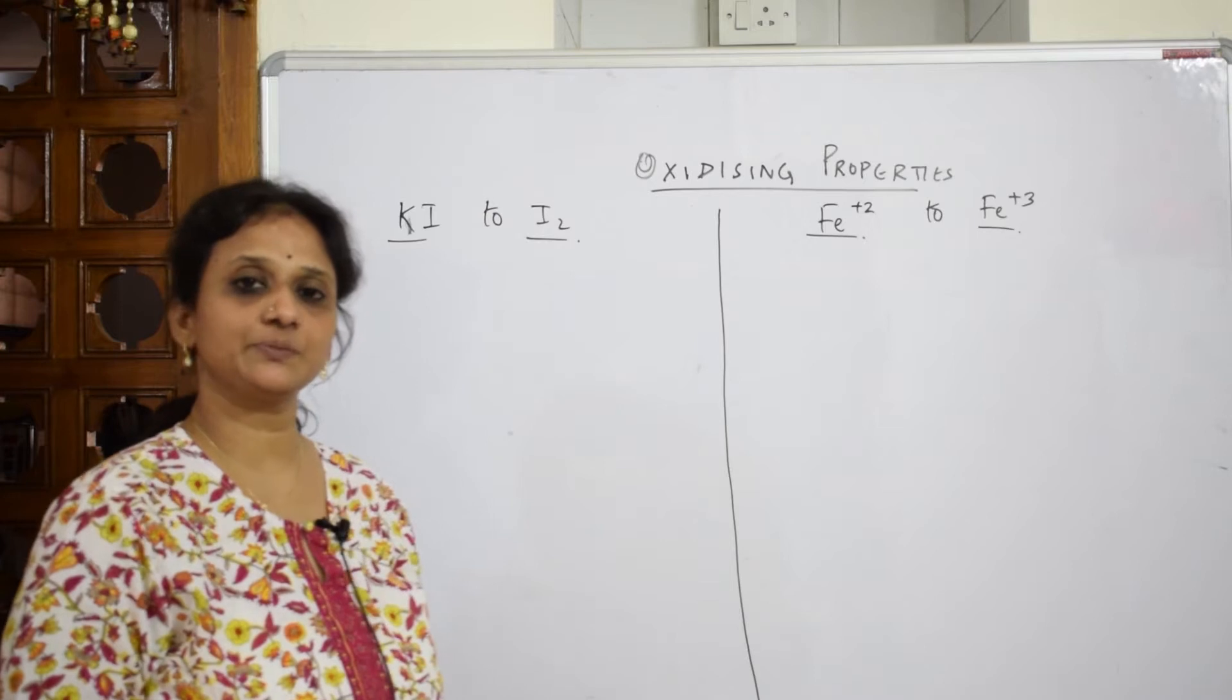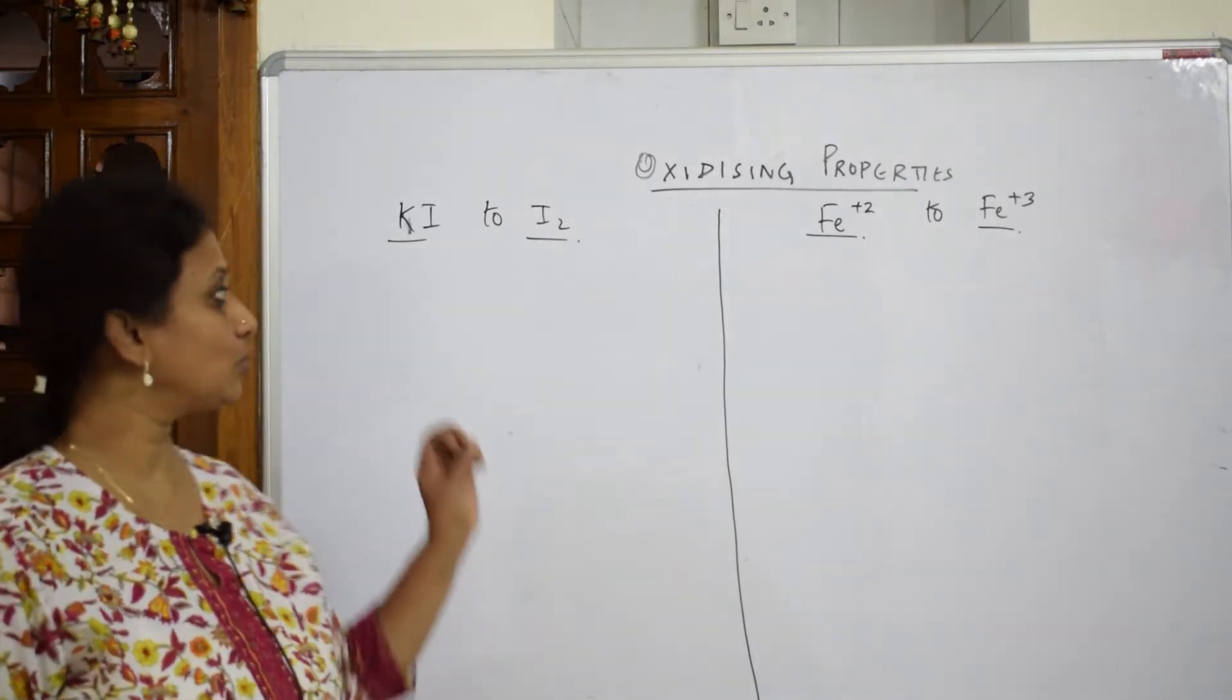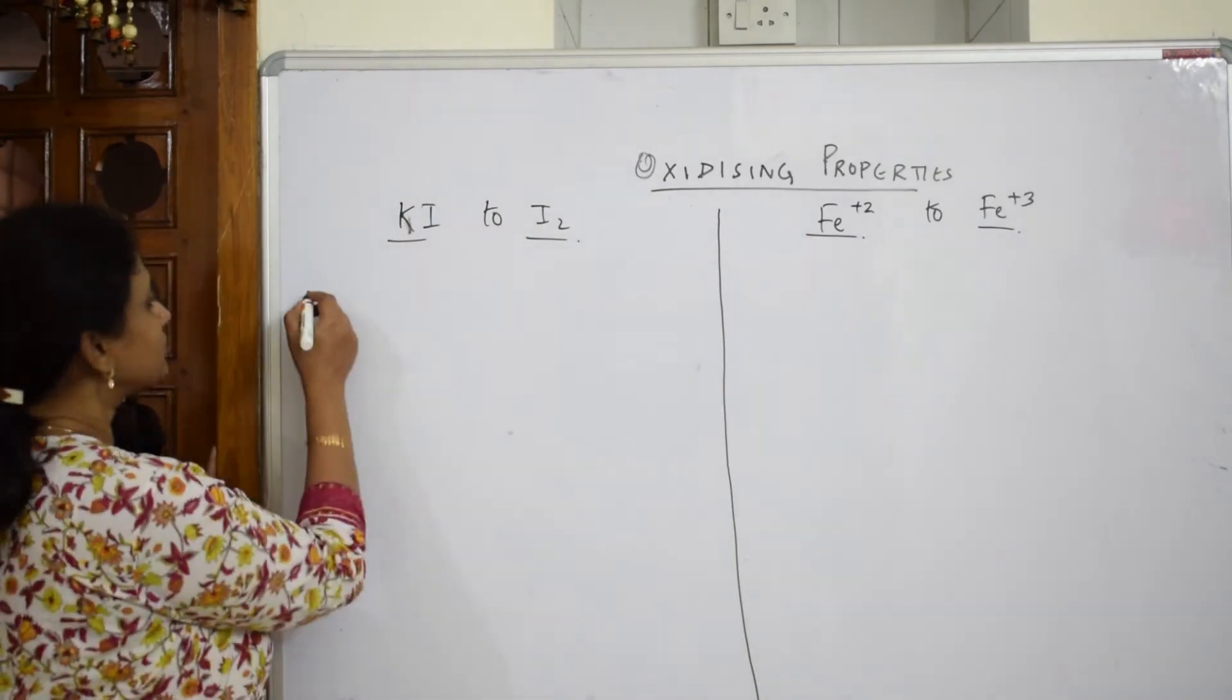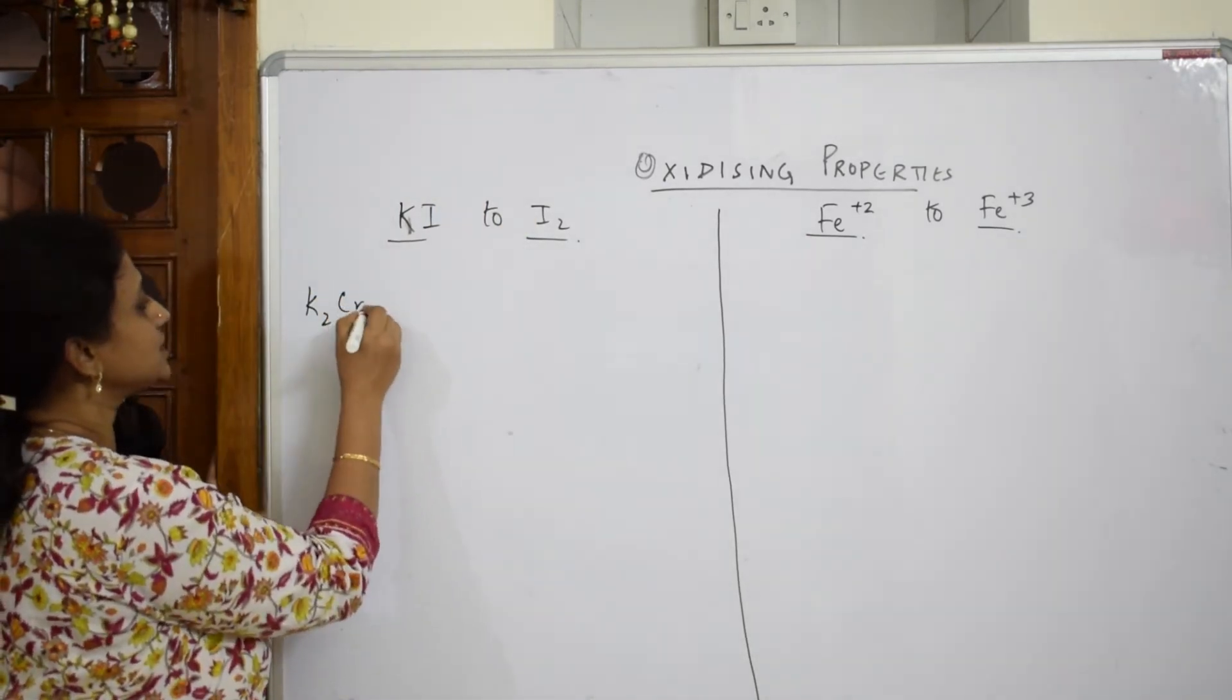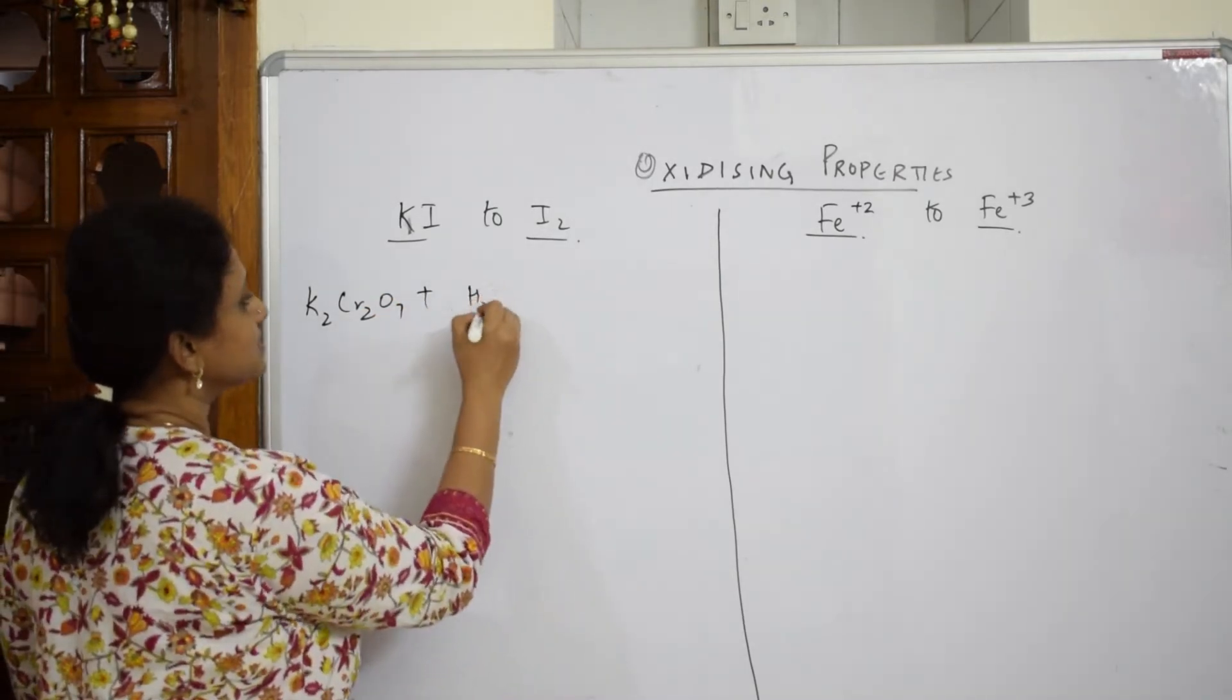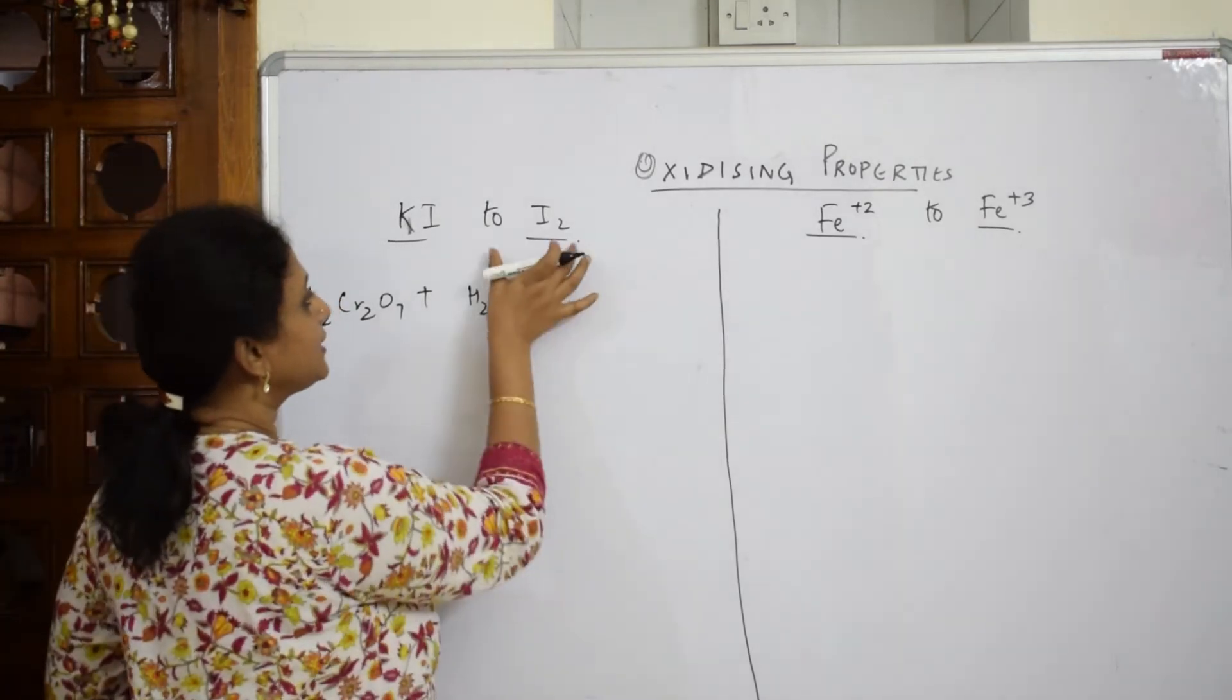Now whenever in the exam if they give you oxidizing property, remember important compounds. First the basic things are same, but only thing you have to remember is what to oxidize to what. Suppose if I am going to take K2Cr2O7, we very well know sulfuric acid is compulsory because it is acting as an oxidizing agent.